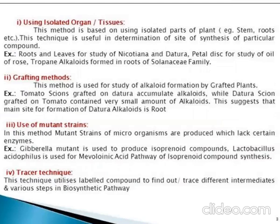The first method is using isolated organs and tissue. This method is based on using isolated parts of the plant — parts like stem, roots, etc. This technique is useful in determination of the site of synthesis of particular compounds. For example, roots and leaves are used for the study of nicotine and Datura, and the petal disc is used for the study of oil of the rose.